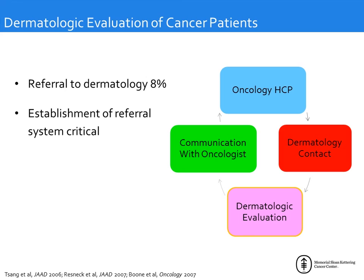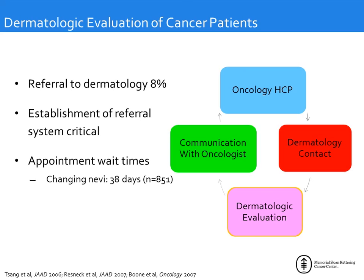It is important to establish a referral system if possible, but this is not always feasible. A study from UCSF by Jack Resnick, who called over 851 dermatology offices pretending to be a patient with a changing mole — one of the most emergent conditions because it could indicate melanoma — found that the median wait time for an appointment was about 38 days. You cannot wait 38 days when your patient has a skin toxicity requiring dermatologic evaluation.